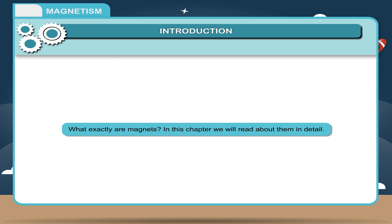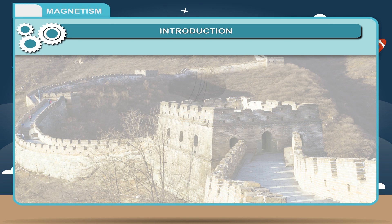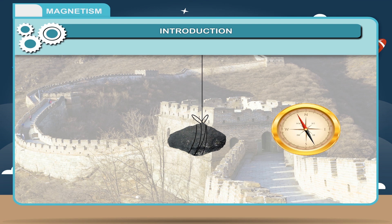What exactly are magnets? In this chapter, we will read about them in detail. According to Chinese literature, magnetism was known to Chinese as early as 2000 BCE. Chinese discovered that when a piece of magnetite was suspended freely, it always pointed in a particular direction.